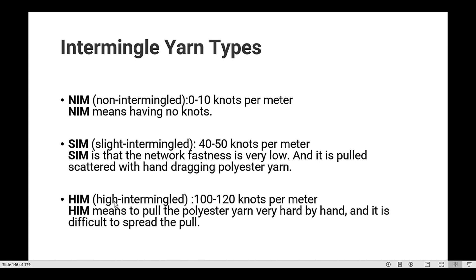HIM is high intermingling yarn, 100 to 120 knots per meter. HIM means to pull the polyester yarn very hard by hand and it is difficult to spread the pull.